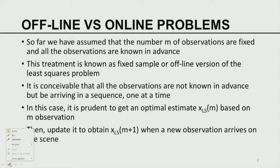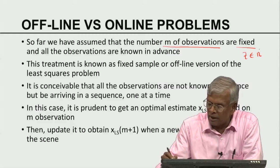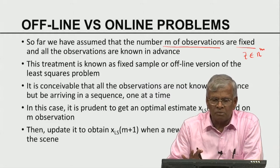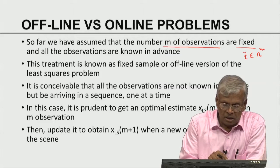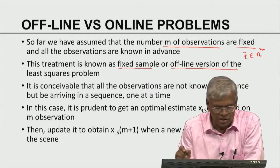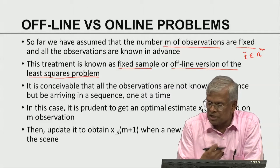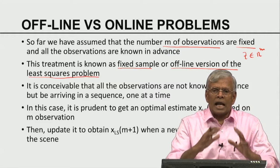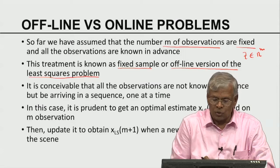We have assumed that the number of observations M is fixed. Z belongs to R^m, meaning there are M observations given to us and that is it. We assume the vector Z to be a vector of fixed length M. This treatment was known as the fixed sample or offline version of least square problems. For example, I go to the lab, make M individual observations, collect them into a vector, close the lab, and then come back to do the analysis — that is what is called offline.